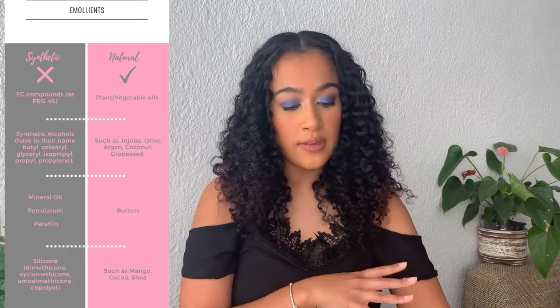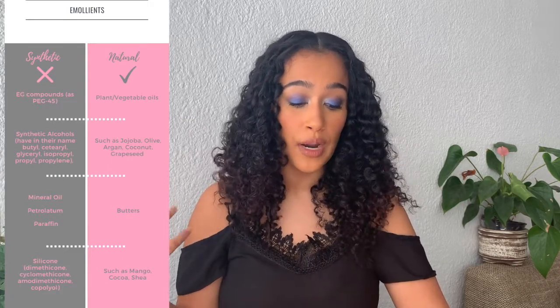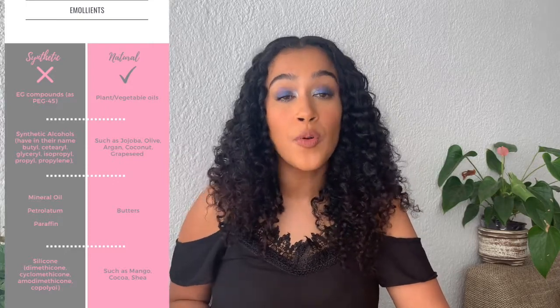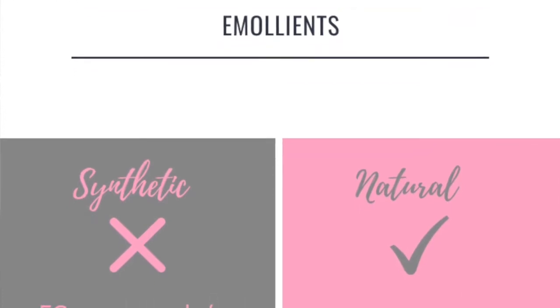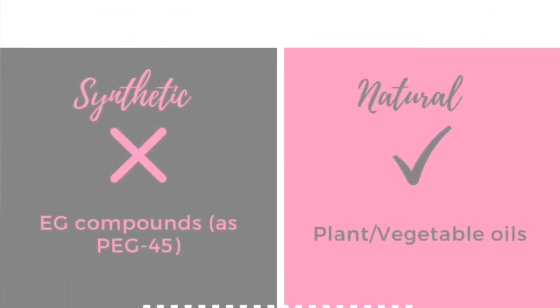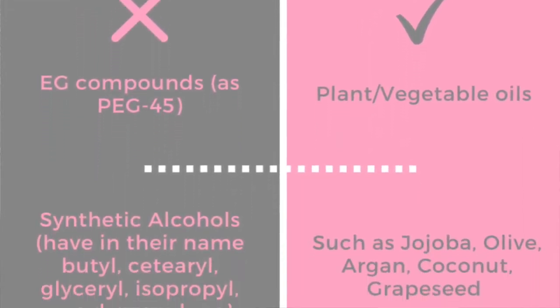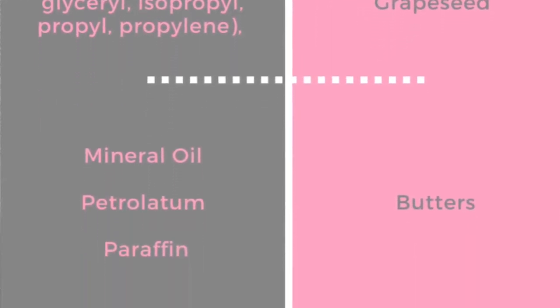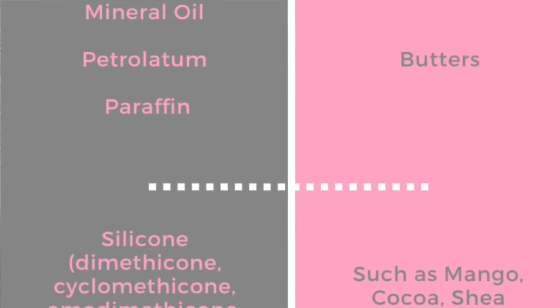Moving on — emollients, or moisturizers. The main purpose of emollients is to make your hair or skin softer. Synthetic emollients create a film around the hair strand, which softens it and prevents moisture from being released. If you've got low porosity hair that can be somewhat useful, but over time the film gets thicker and thicker, eventually suffocating the hair. You'll have to use a clarifying shampoo every second wash or so to remove that build-up and keep your hair healthy. Some of these ingredients can also cause allergies.